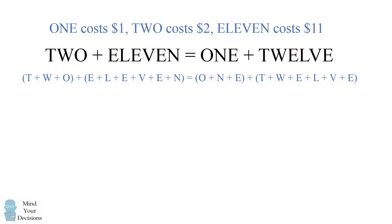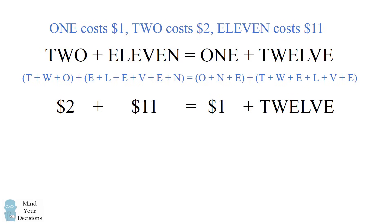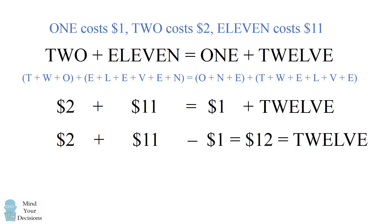We were given the cost that 1 equals $1, 2 equals $2, and 11 equals $11. So we know that the letters for 12 will follow this algebraic equation. So we can subtract $1 from both sides to get that 12 costs exactly $12.